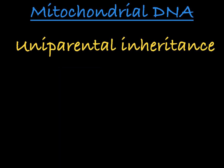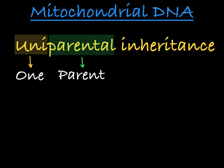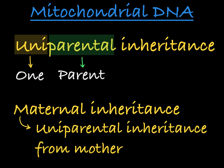This is a type of uniparental inheritance — uni meaning one, parental meaning parent — coming from only the female parent. Inheritance from only the female parent is called maternal inheritance. So all of the mother's offspring will receive their mtDNA from the mother, not from the father.